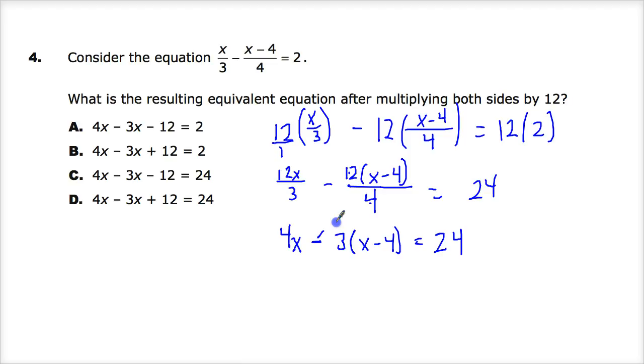Now I need to distribute a negative 3 to both. So 4x, negative 3 times x is negative 3x. Negative 3 times negative 4 is plus 12. And that gives you this as your final answer, which is the correct answer.